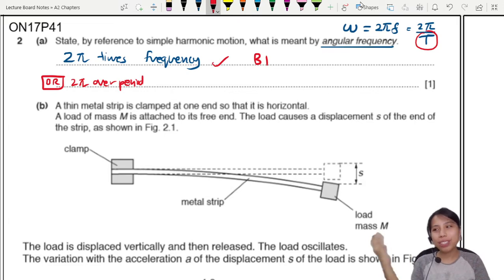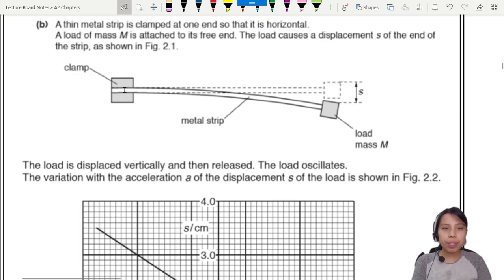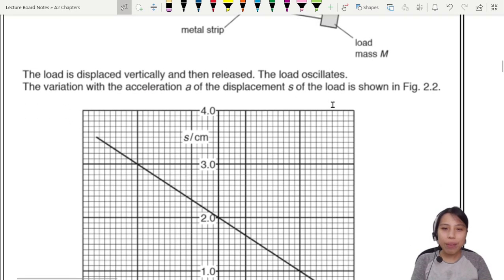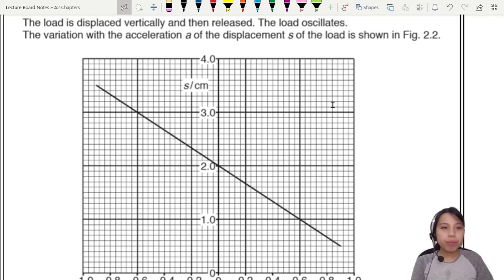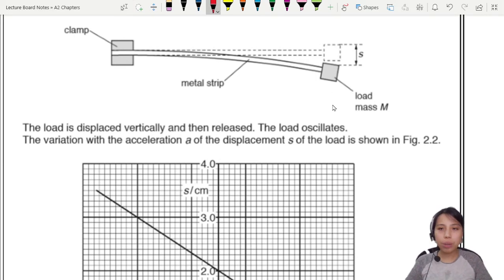So here's our metal strip clamped on one end and it goes oscillating. You can do this experiment at home by the way. All you need is a ruler, clamp the ruler and you see the ruler goes, and we have a nice graph that goes with it. So load is displaced. The load is pulled down and it starts to oscillate. Variation with acceleration of the displacement is shown.